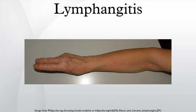The most common cause of lymphangitis in humans is Streptococcus pyogenes, although it can also be caused by the fungus Sporothrix schenckii. Lymphangitis is sometimes mistakenly called blood poisoning. In reality, blood poisoning is synonymous with sepsis or septicemia.